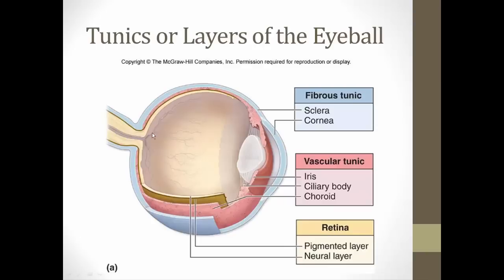The vascular tunic is the next layer inward. The largest portion is the choroid coat, which has a rich blood vessel supply to provide nutrients to the retina. It also has melanocytes that produce melanin, a pigment that helps absorb light and prevent it from bouncing around inside the eye.